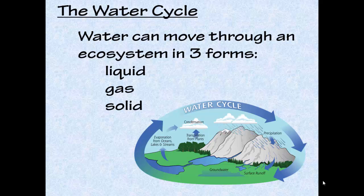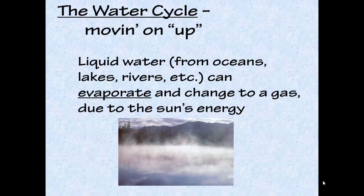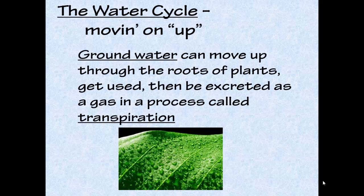You're probably familiar with the water cycle — you've probably learned about this since first grade all the way through junior high. I might throw in a couple new things, but for the most part it's stuff you already know. Liquid water, whether it's from oceans, lakes, rivers, or puddles, can evaporate, meaning it changes from liquid to gas. Groundwater moves up through plant roots, gets used by the plant, and then gets excreted in a process called transpiration — which is really just a fancy word for evaporation coming off of plant leaves.